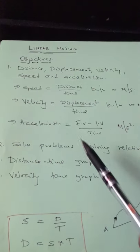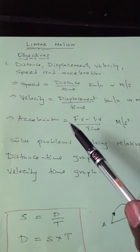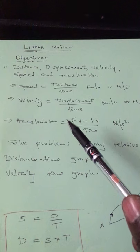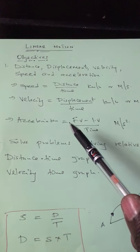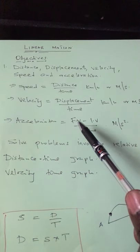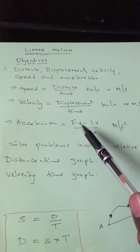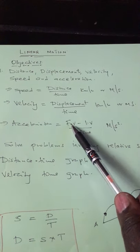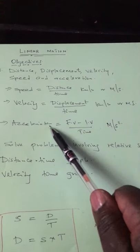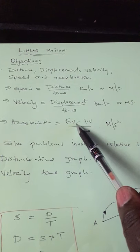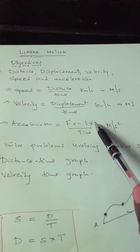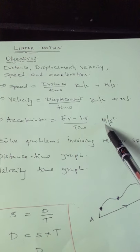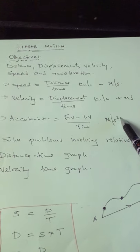Acceleration simply means change in velocity. There should be velocity first for you to have acceleration. When something is changing, to get that change you subtract two values. To get acceleration, it's final velocity minus initial velocity over time. The units will be meters per second squared.